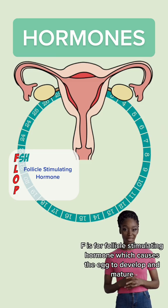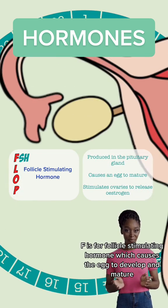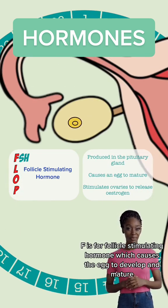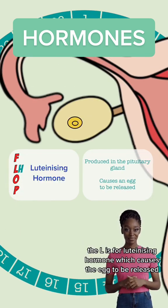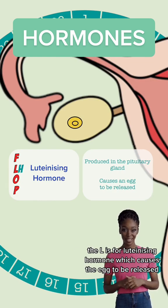F is for follicle-stimulating hormone, which causes the egg to develop and mature. The L is for luteinizing hormone, which causes the egg to be released.